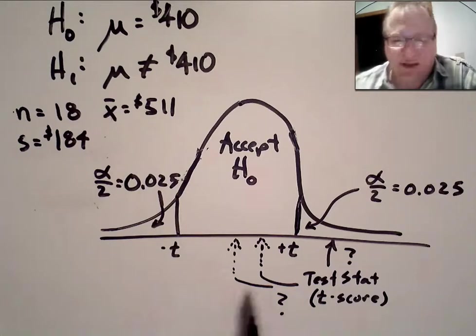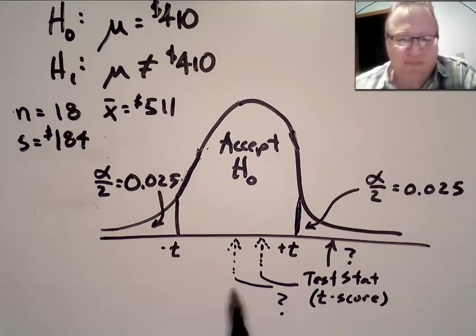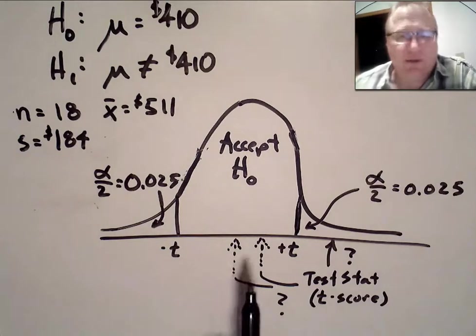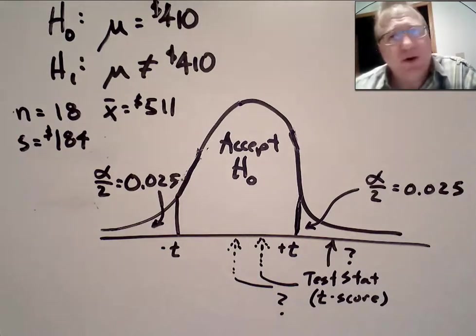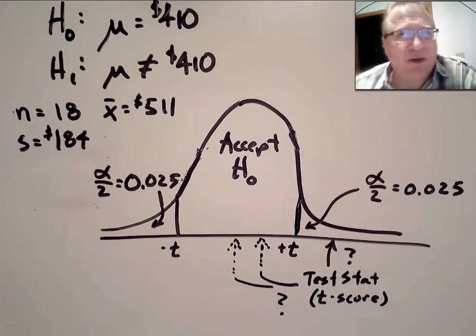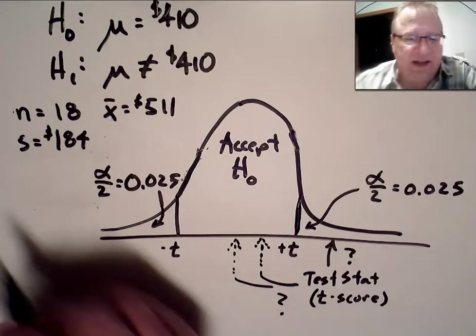So, again, let's think in terms of our distribution. First of all, what type of distribution is it? Well, again, that goes back to whether we know the population standard deviation or if we've just calculated a sample standard deviation. In our case, we did not know the population standard deviation. We calculated it. It's S.